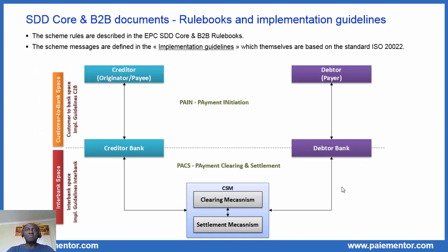These messages are used for customer reporting and provided in a specific document that I will reveal to you. In each SDD scheme, there are three main documents: the rulebook and the implementation guidelines. The scheme rules are described in the rulebook, and the message exchanges in the scheme are defined and presented in the implementation guidelines. It is important to understand that the implementation guidelines themselves are based on the standard ISO 20022. We will get back to this crucial point in future videos.